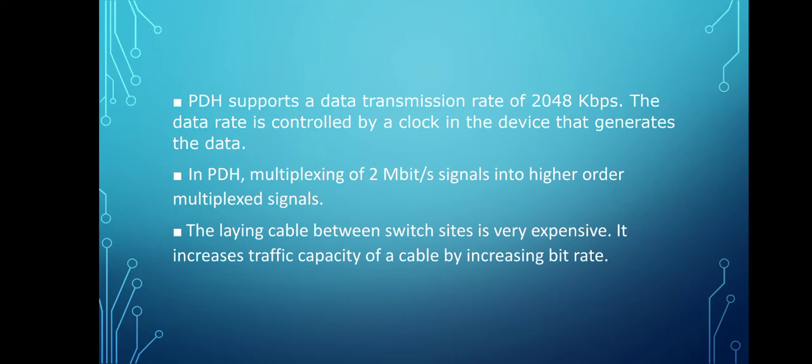PDH supports a data transmission rate of 2048 kbps. The data rate is controlled by a clock in a device that generates the data. In PDH, multiplexing of 2 Mbit signals into higher order multiplexed signals is used. The laying of cable between switch sites is very expensive, but it increases the traffic capacity of a cable by increasing the bit rate.